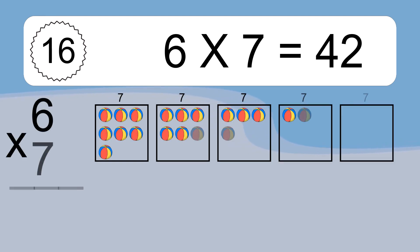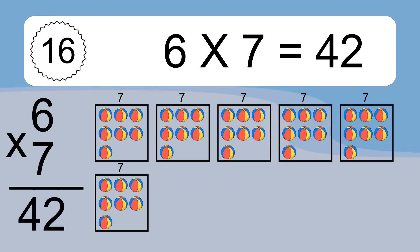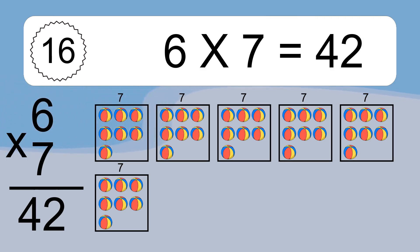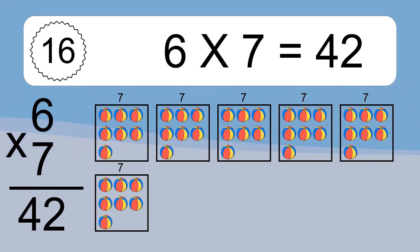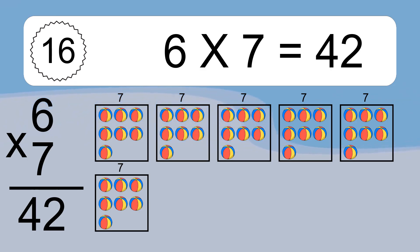Six times seven equals forty-two. We have six boxes, and each box has seven colorful balls inside. If you count all the balls in all the boxes together, you will have six times seven balls. This equals forty-two balls.